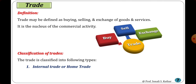Trade is classified into internal trade (or home trade) and international trade (or foreign trade). Internal trade occurs within the boundaries of a country, involving buying, selling, purchasing, and exchange of goods between different states or cities but within one country. International trade occurs between different countries, known as foreign trade because foreign countries are involved.